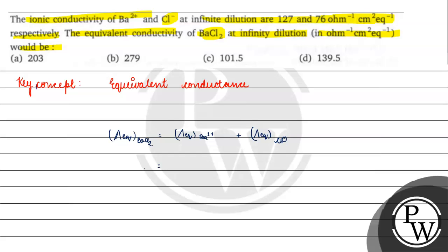We will add the equivalent conductance of BaCl2. If you look at this unit, this is equivalent conductance, so we don't need to change it. We will directly use these values.